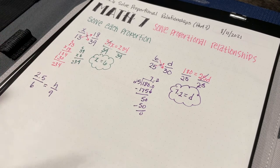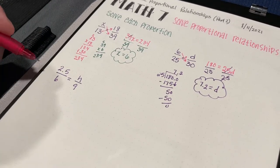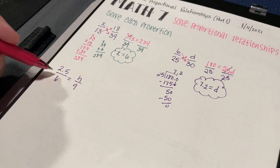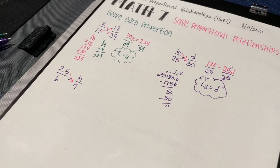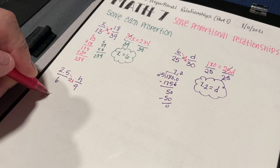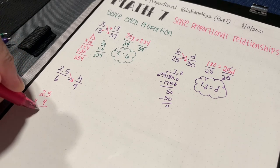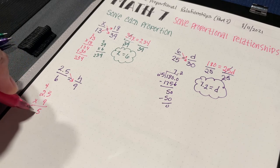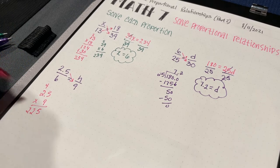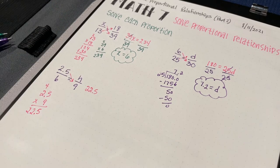Let's look at the last warm-up problem. Don't get freaked out just because there's a decimal — you go through the same process. 2.5 times 9: 9 times 5 is 45, 9 times 2 is 18 plus 4 is 22. I've got one decimal place, so it's 22.5.